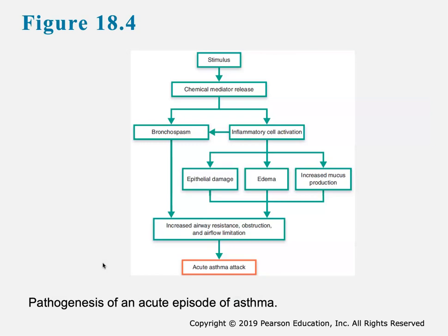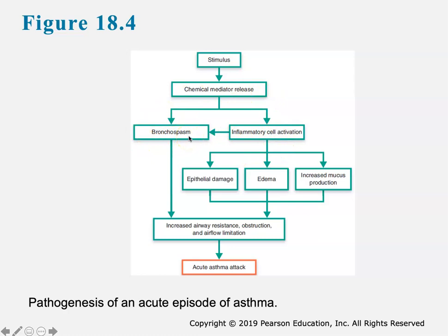If we talk about what's happening during an acute episode of asthma or an asthma attack: there is almost always some sort of stimulus or trigger, whether it be an allergen, occupational exposure, tobacco smoke, or exercise. That trigger causes chemical mediators to be released, which activate immune cells. The chemical mediators and immune cells then lead to changes in the bronchi - bronchospasm - where that smooth muscle lining those bronchioles starts to spasm or contract, increasing airway resistance, causing obstruction, and limiting airflow. That's what causes the attack.